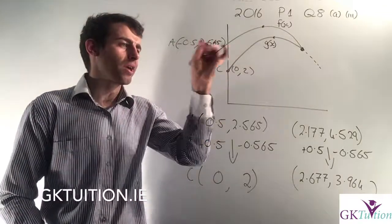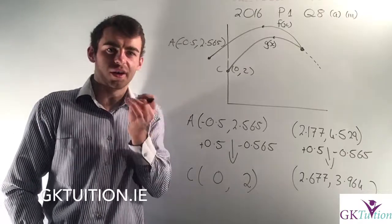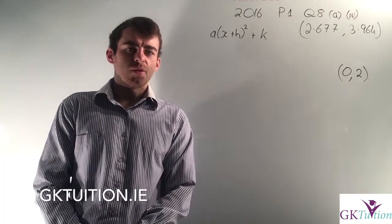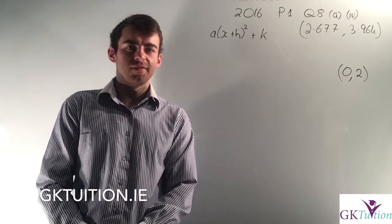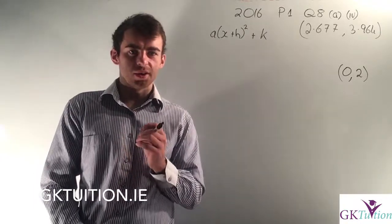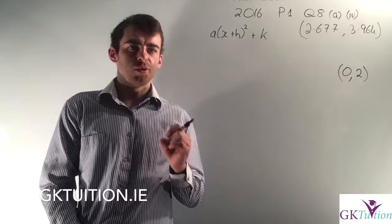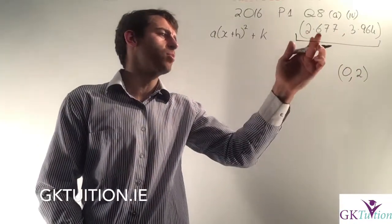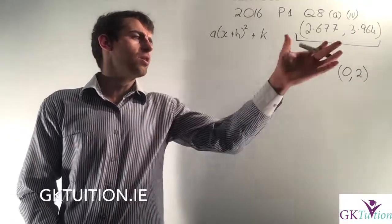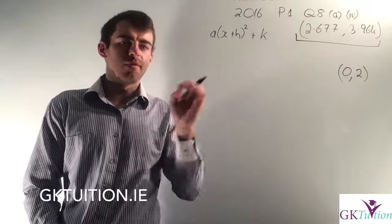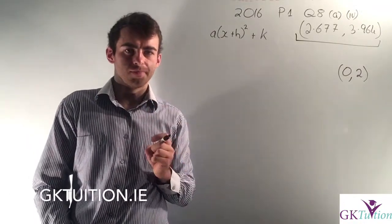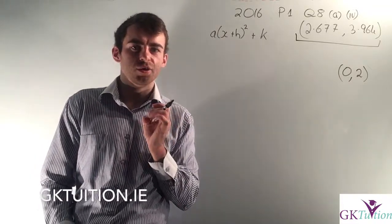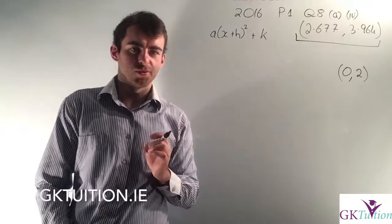For Part A4, it says 'Hence or otherwise find the equation of the parabola g(x).' The way I want to do it is what they imply by 'hence.' In the previous part I worked out that the maximum point of g(x) was (2.677, 3.964). I can use this and the vertex form of a quadratic to find the equation. If you're not comfortable with vertex form, I'd advise you to watch my video on 2017 Paper 1 Question 1 first.